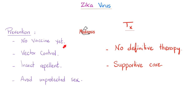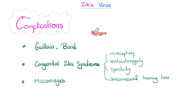Prevention: there is no vaccine yet. Use vector control measures, insect repellent, and avoid unprotected intercourse. Treatment: there is no definitive therapy — just provide supportive care. Complications of Zika virus include Guillain-Barré syndrome, congenital Zika syndrome with microcephaly, ventriculomegaly, spasticity, sensorineural hearing loss, ocular manifestations, and pregnancy loss.